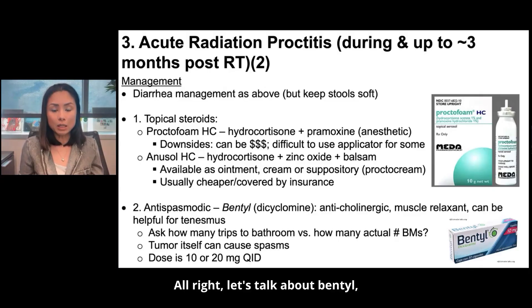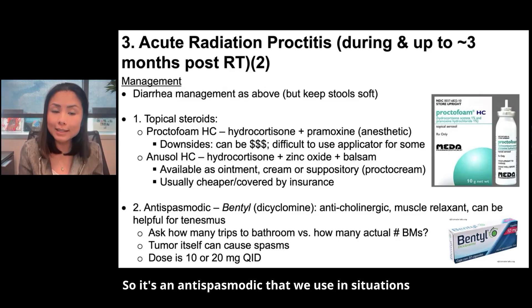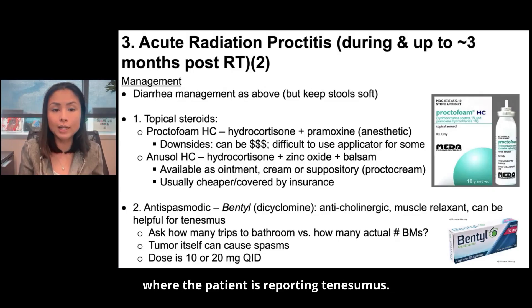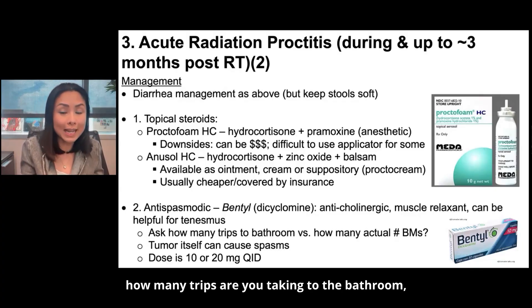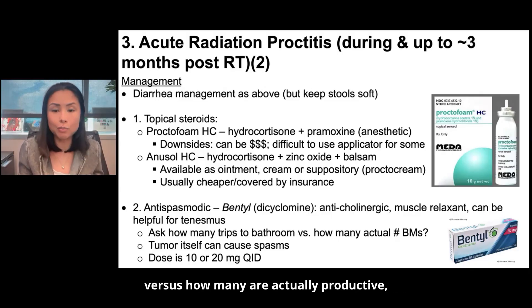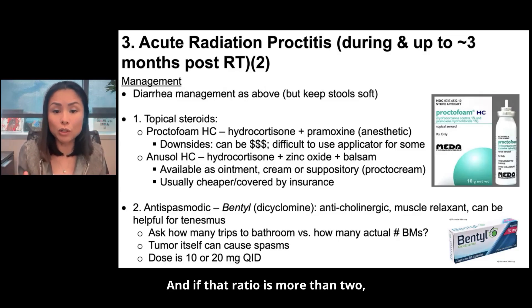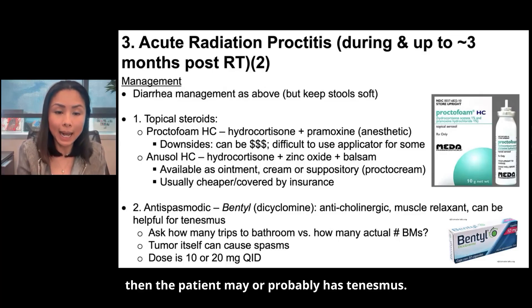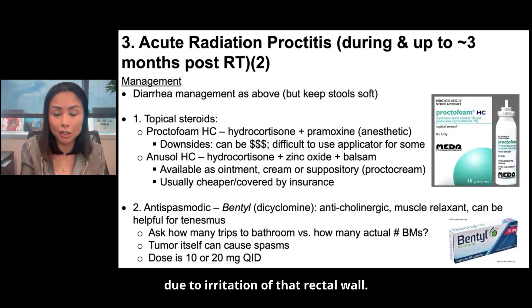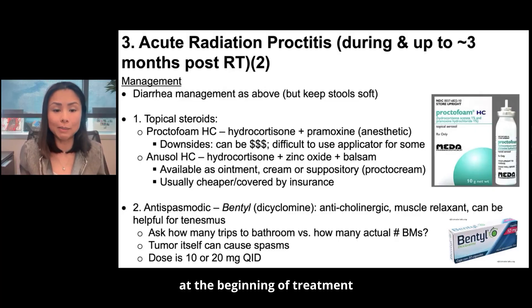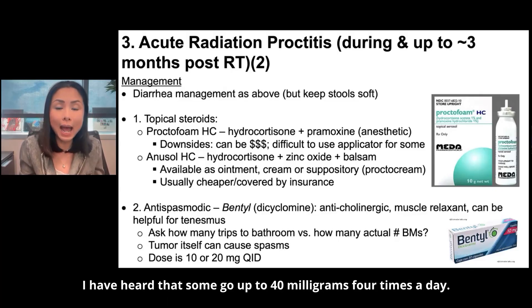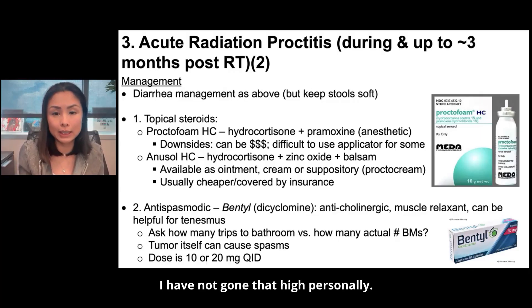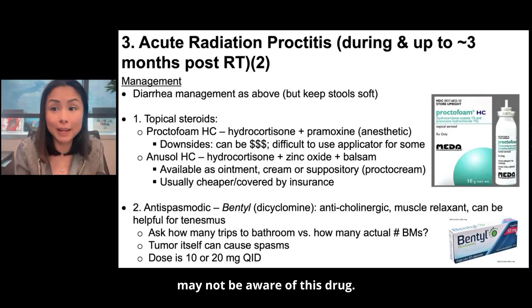Let's talk about Bentyl, because this drug has really helped many of my patients. It's an antispasmodic that we use when the patient is reporting tenesmus. To elicit that from a patient, ask how many trips to the bathroom they're taking where they feel like they have to go versus how many are actually productive — meaning how many bowel movements are actually happening. If that ratio is more than two, the patient probably has tenesmus. Remember that the tumor itself can cause tenesmus due to irritation of the rectal wall, so you may want to start this drug at the beginning of treatment. The dose is 10 to 20 milligrams four times a day.